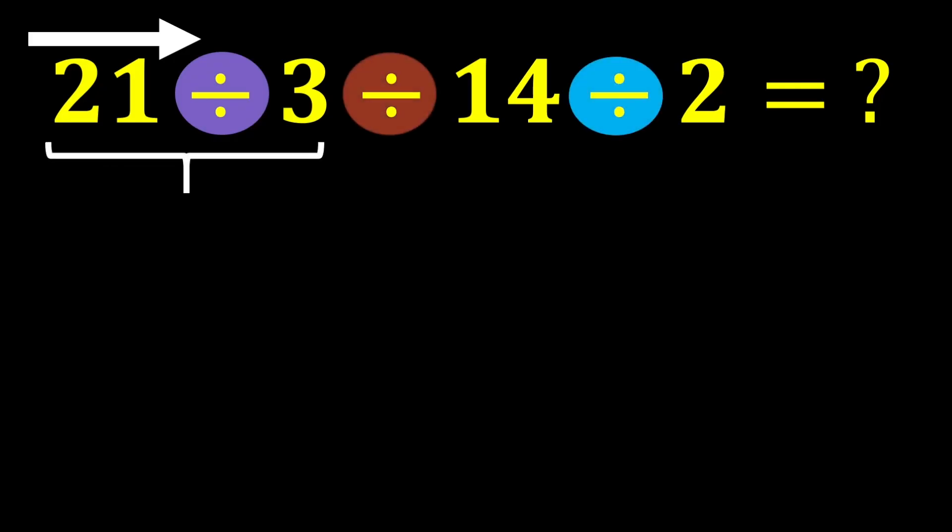21 divided by 3 gives us 7, and 7 divided by 14 gives us 7 over 14. If we divide the numerator and the denominator by 7, the fraction becomes 1 over 2.